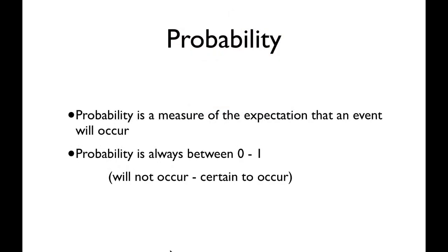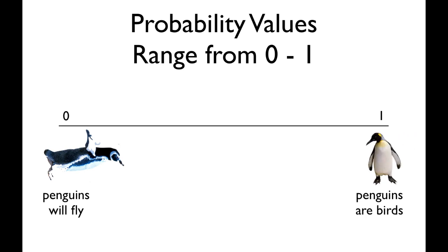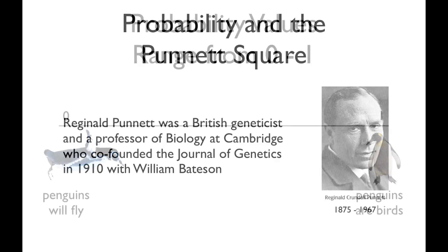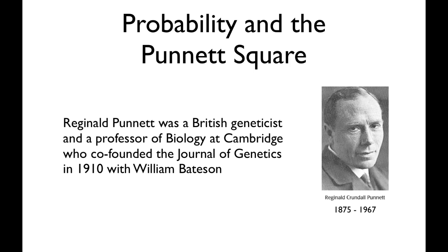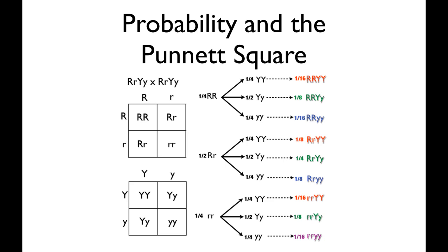A lot of genetics has to do with probability, and probability is just a measurement of the expectation that an event will occur. Probability values always range from zero to one — zero means absolutely impossible, one means absolutely certain. Probability turns out to be a little messy when we talk about alleles, and a professor of genetics at Cambridge came up with a way to sort this out. I want to show you how to use this square and solve some basic genetics problems with it.